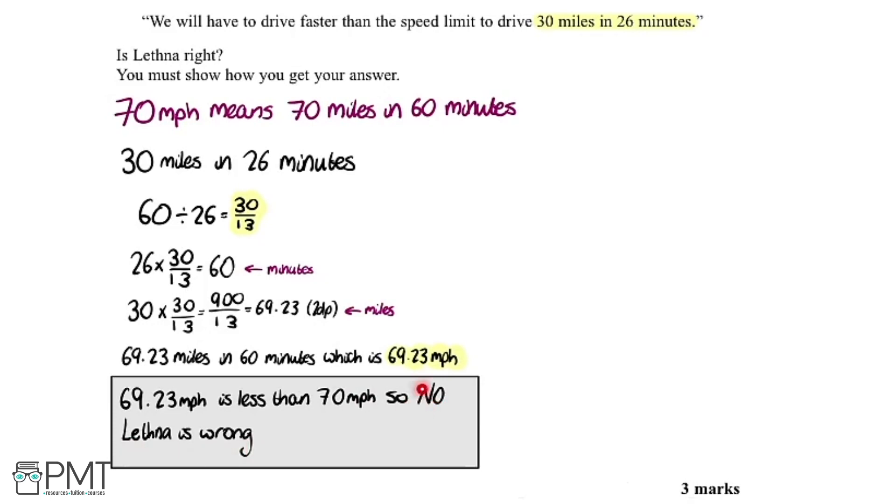It's important here to say the word no because we need to look back at the question. We always need to remember to answer the question when we have to do a statement like this. We're answering the question is Lettner right and the answer is no and this is why.